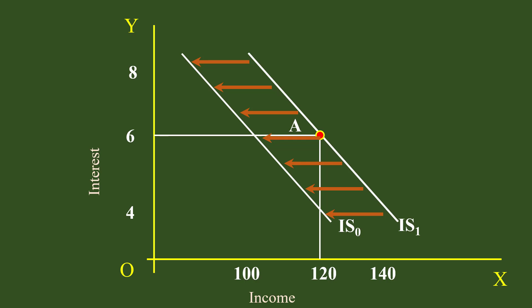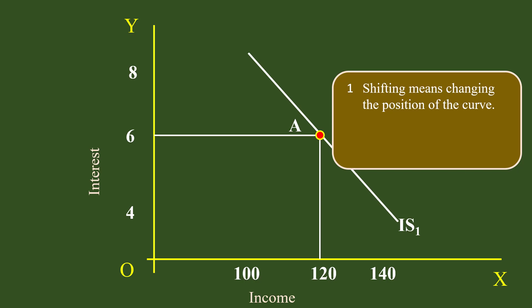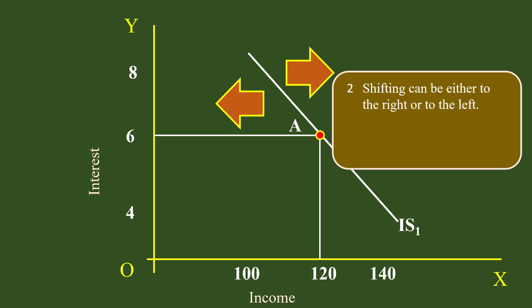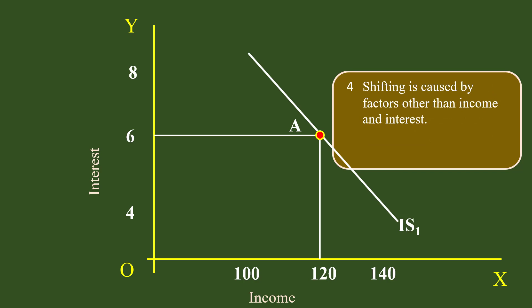After a shift, the curve passes through point E which shows less income Rs.100 and the same interest 6%. Also through point F which represents the same income Rs.120 and less interest 4%. Important points about shifting of the IS curve: 1. Shifting means changing the position of the curve. 2. Shifting can be either to the right or to the left. 3. After shifting, each point on the new curve is away from the corresponding point on the initial curve. 4. Shifting is caused by factors other than income and interest. Each factor will be discussed elaborately in the next video.